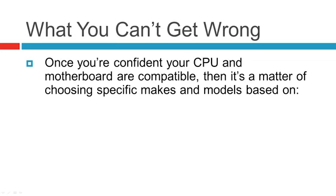Just to wrap this all up: once you're confident your CPU and motherboard are compatible, it's really just a matter of choosing the right makes and models based on features. For example, I was doing video editing, so I needed a graphics card that has CUDA. If I wasn't doing video editing, I could have chosen a different graphics card. All of them would be compatible, fit into the slot, and display images on the screen, but I had a specific requirement because of a certain program I was using.